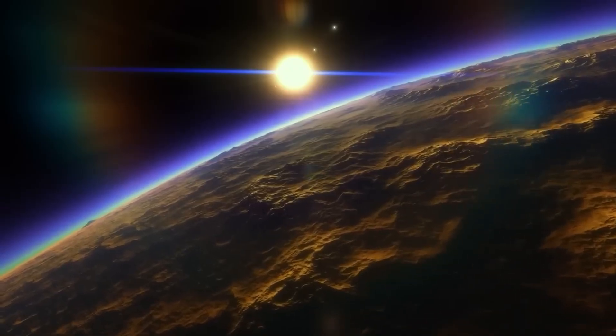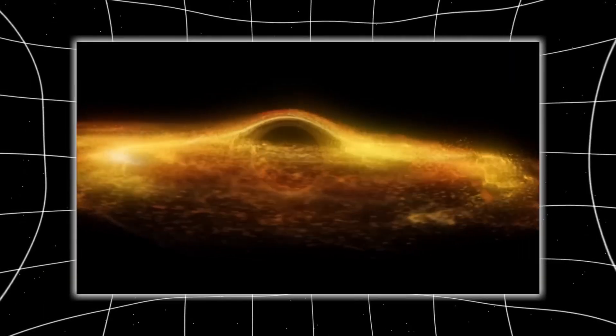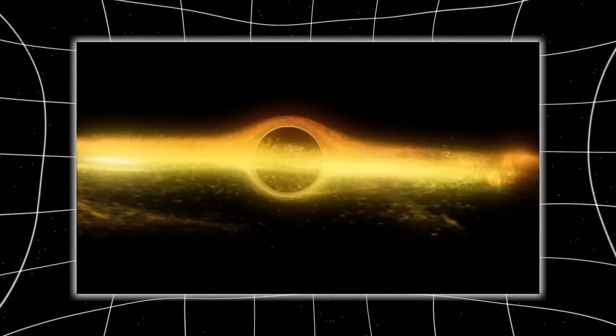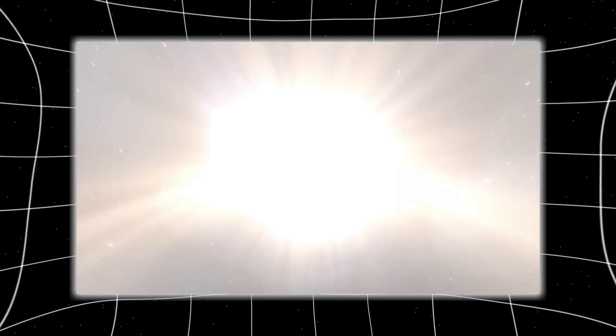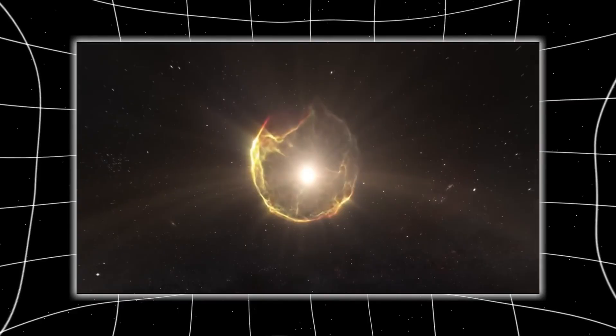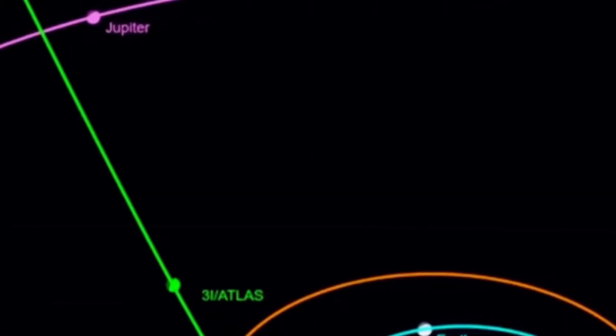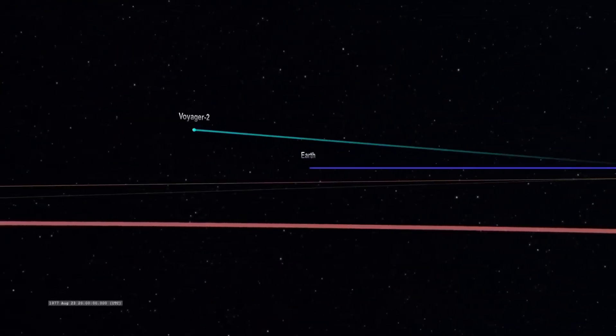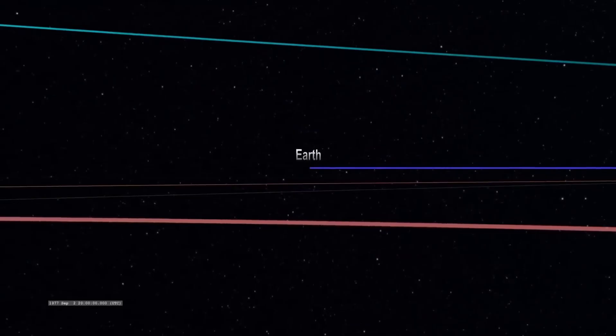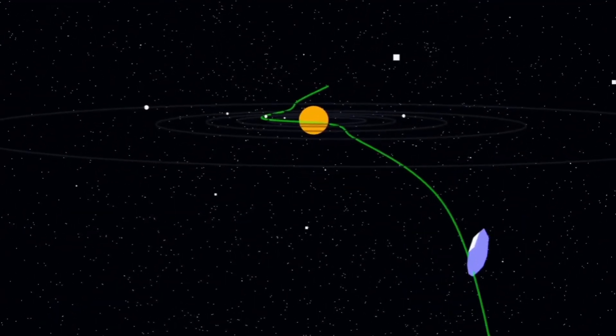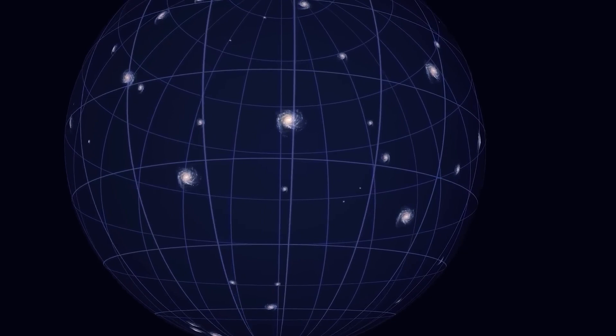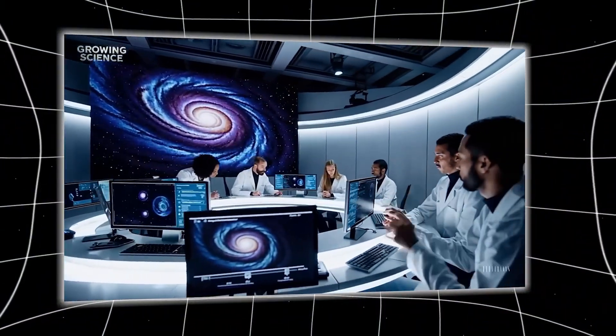Our century of unrestrained radio transmissions, our TV signals, even the intentional interstellar messages we've sent have been like a flare in the night sky. If three-eye Atlas is a probe, it might not be here randomly. It could be here because we called it. That changes the nature of the mystery entirely. It's no longer just about whether the object is alien, but whether its journey toward us began the moment we first revealed ourselves to the void.